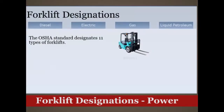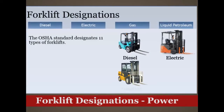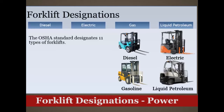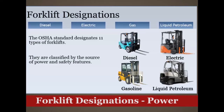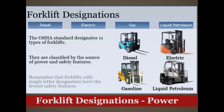The OSHA standard designates 11 types of forklifts. These classifications are used to determine what type of forklift is appropriate for specific hazard environments. They are classified by the source of power and safety features. Remember that forklifts with single letter designators have the fewest safety features.